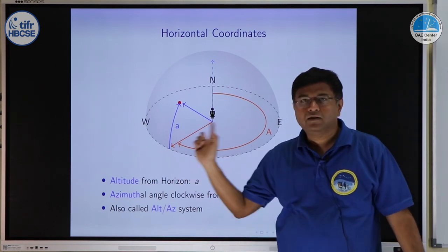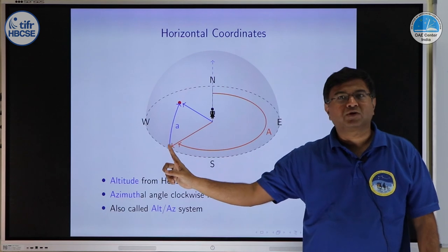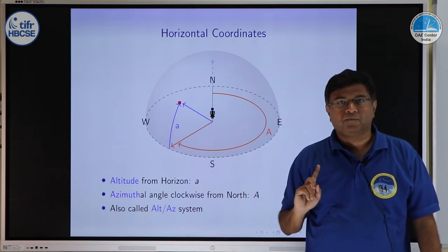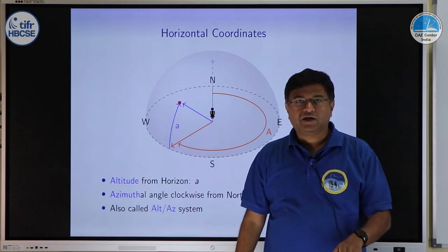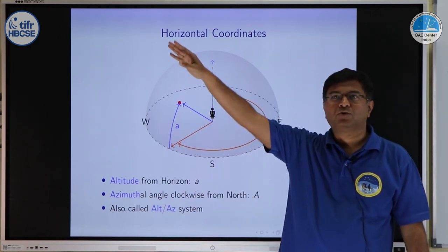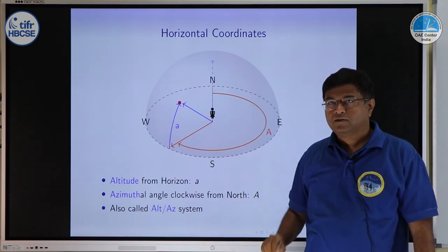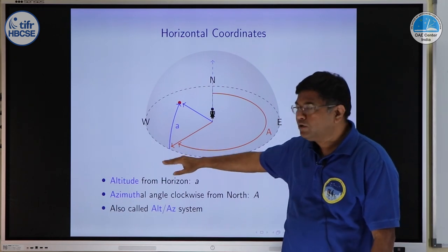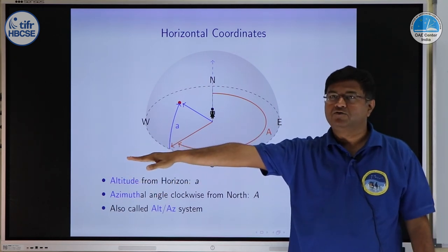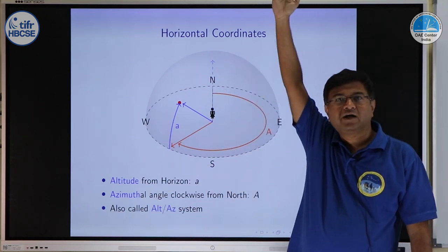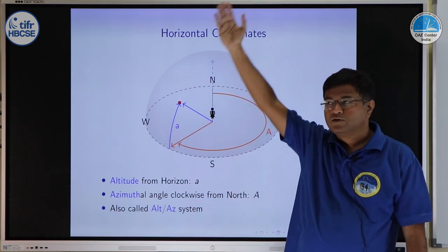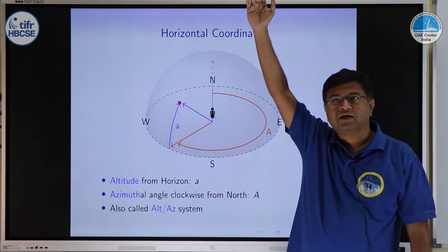This full circle along the ground parallel to ground is your azimuth and then the second coordinate is altitude, how high the star is from the horizon. You go from 0 or if the star is at the horizon you say altitude is 0, if the star is at zenith you say altitude is 90 degrees. So between 0 to 90 that is the altitude of the star.